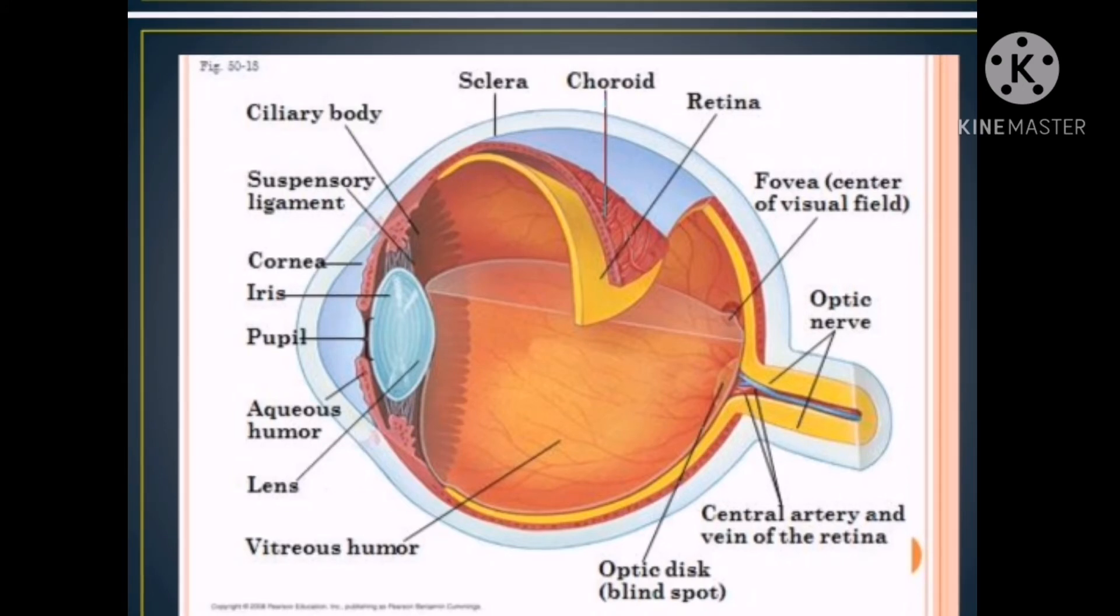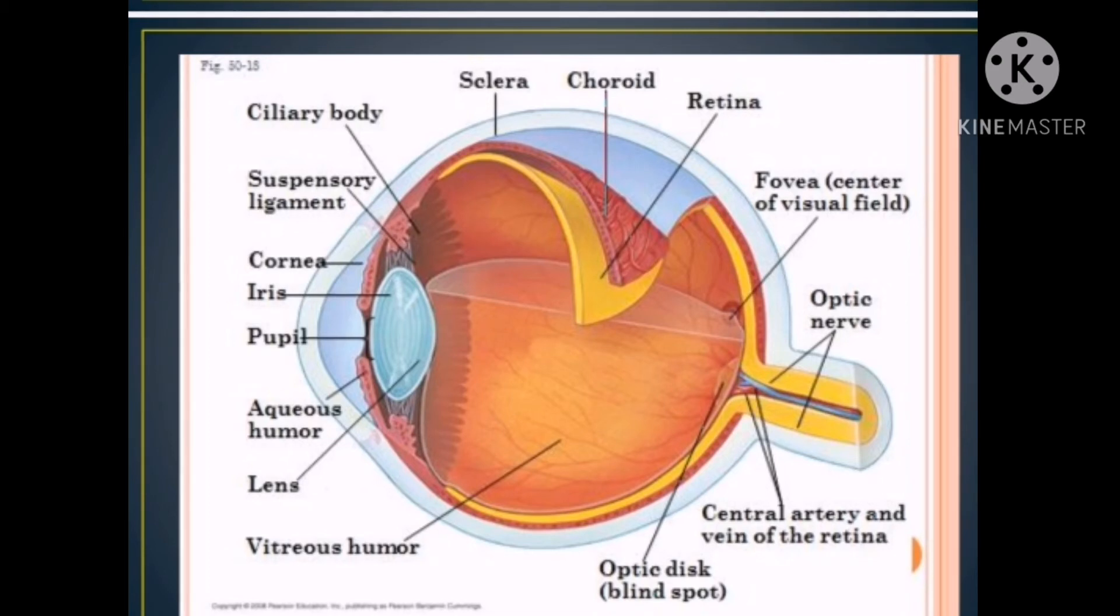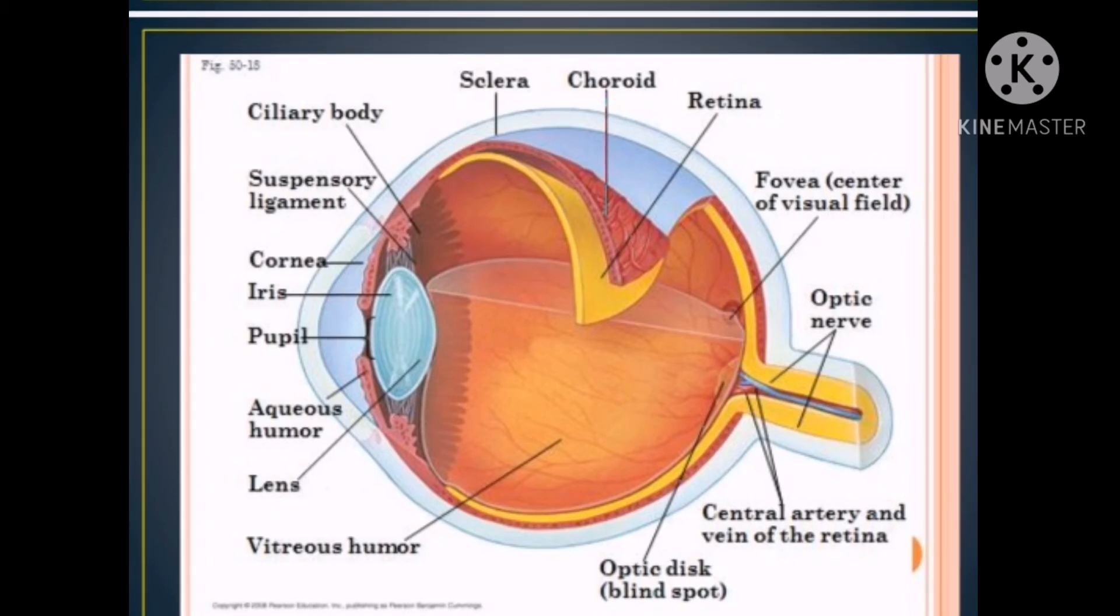So how do we see? Items reflect light and light enters the eye through the cornea and the pupil. The lens bends the light and focuses it on a part of the retina. The photoreceptors convert the image to electrical impulses and impulses are sent to the brain. The brain interprets the impulses as an image. Items reflect light and we see.